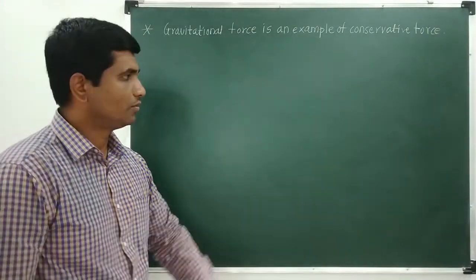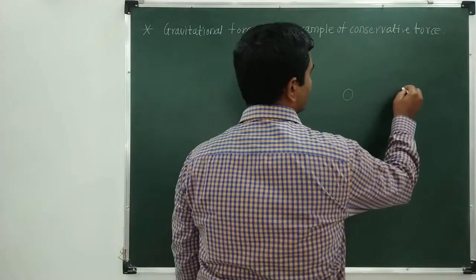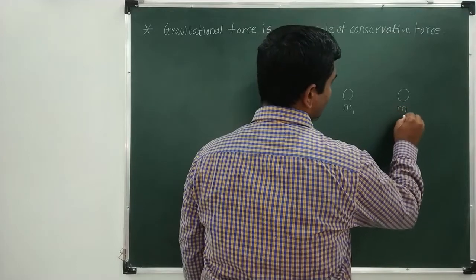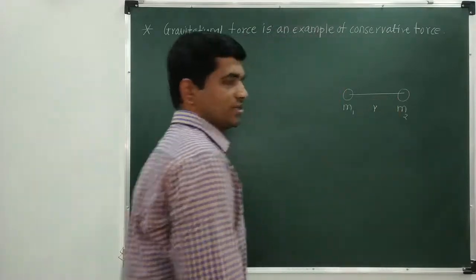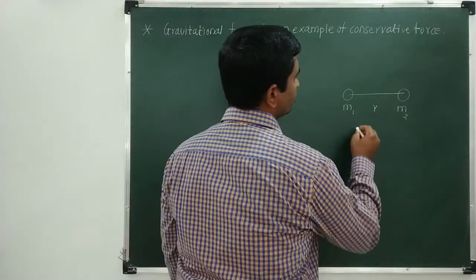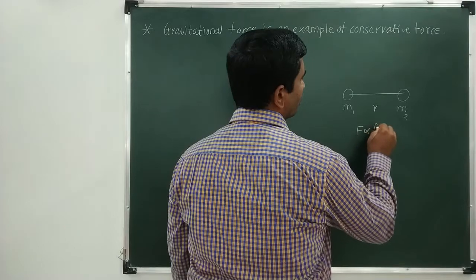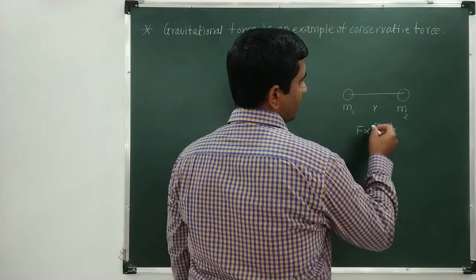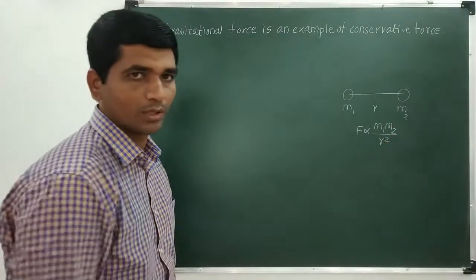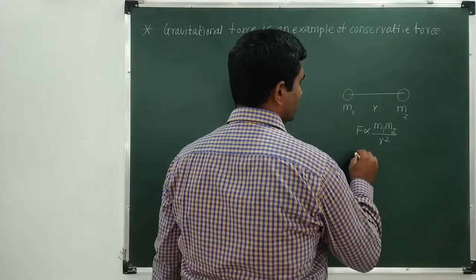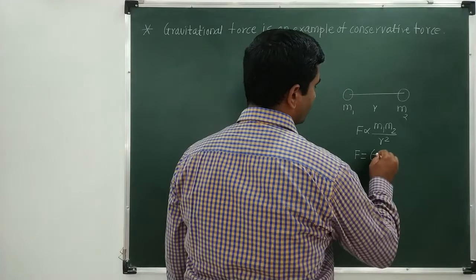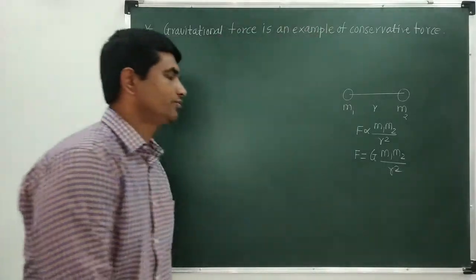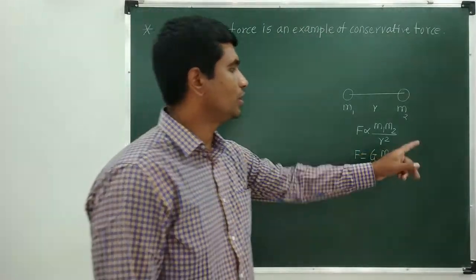When there are two bodies — the first body with mass M1 and the second body with mass M2 — separated by distance R, then the gravitational force between these two objects is directly proportional to the product of their masses and inversely proportional to the square of the distance between them. Removing the proportionality sign, we introduce the gravitational constant G, so the gravitational force is expressed as F = G·M1·M2 / R².